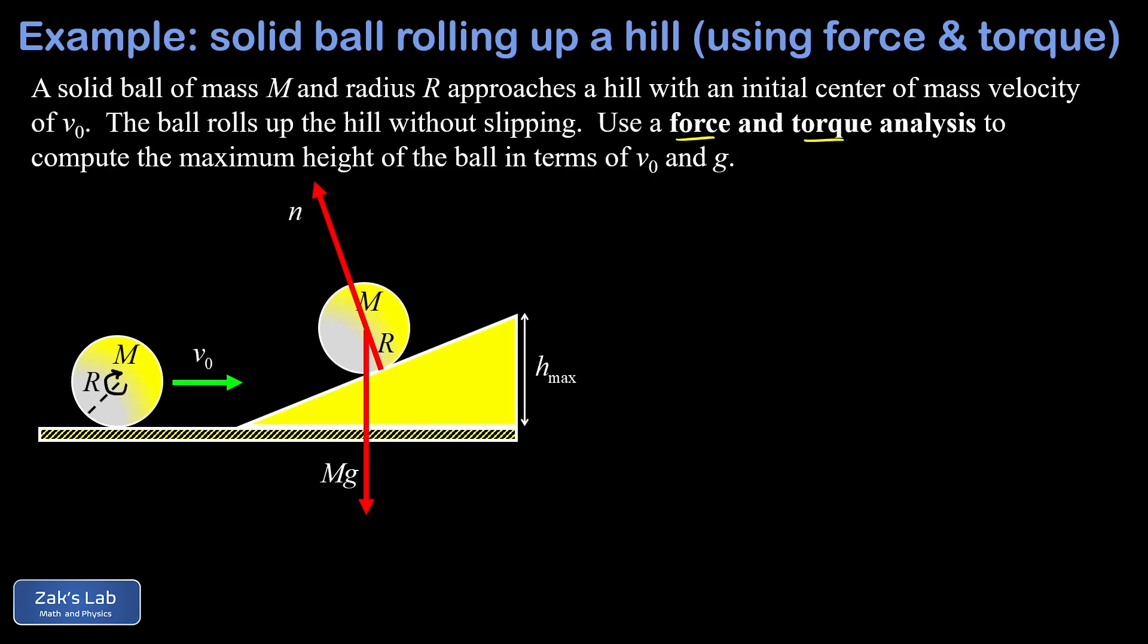Now one additional thing we can think about to improve our intuition for the direction of the static friction force is to see that this is precisely the mechanism that converts the rotational energy of the ball into additional height as it rolls up the ramp.